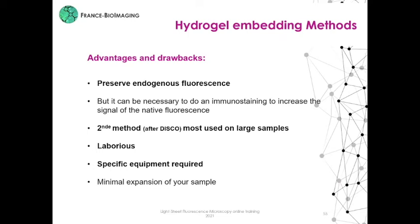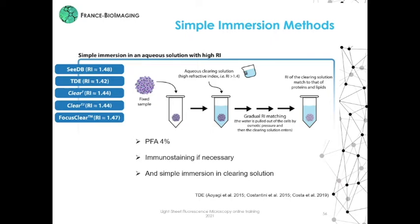The last group is simple immersion. First a fixation step in paraformaldehyde at 4%, then an immunostaining step if necessary, and the sample immersion in an aqueous clearing solution. In fact, water is pulled out of the cell by osmotic pressure, and then the clearing solution enters. The refractive index of the clearing solution matches that of proteins and lipids.